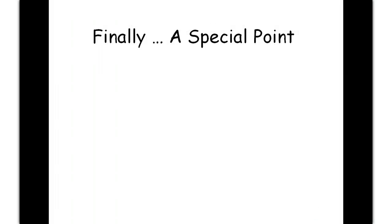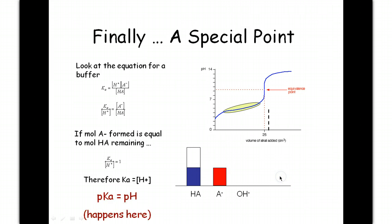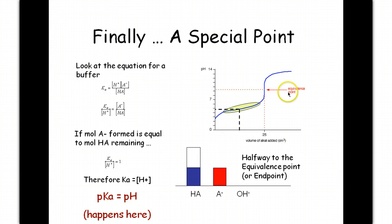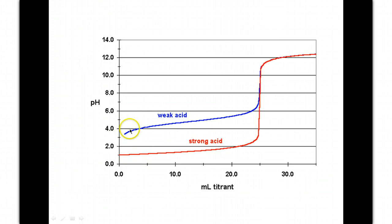Going back to the PowerPoint: at the half-equivalence point, when you have equal amounts of weak acid and conjugate base, pH equals pKa. Whatever your pH meter reads at halfway to the equivalence point is also your pKa. Ka can be used to identify what your weak acid actually is, because every weak acid has its own Ka. Notice that the weak acid titration curve is significantly more buffered than the strong acid curve — the change in pH is far more gradual because adding strong base to weak acid creates that buffered system.